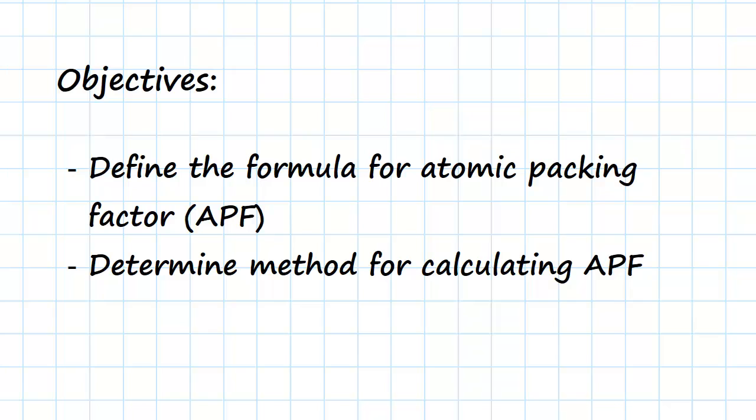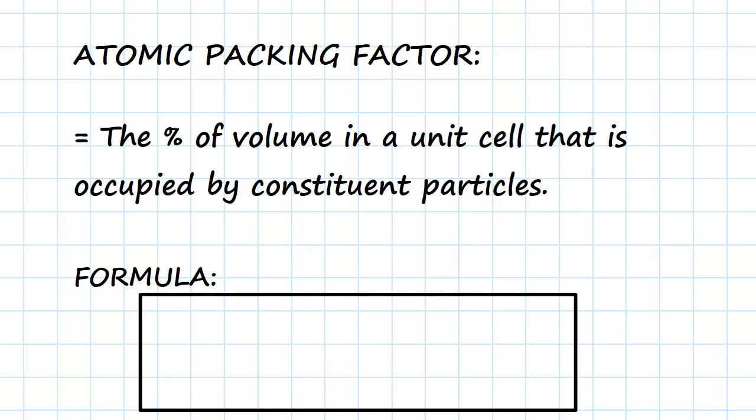So just to start with, what do we mean when we say atomic packing factor? Essentially, it means the percentage of volume in a unit cell that is occupied by constituent particles. So really what we're saying is if we look at the unit cell, what percentage of that cell is going to be occupied by atoms? And as you can guess, this is going to be different for a simple unit cell, an FCC and a BCC unit cell.